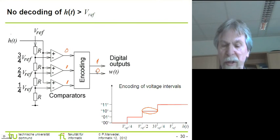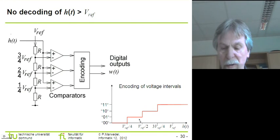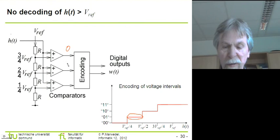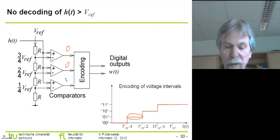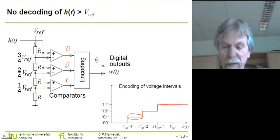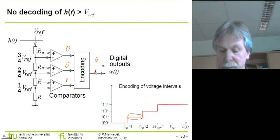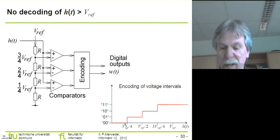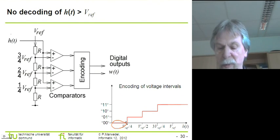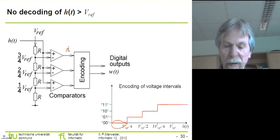That encoder would generate that corresponding encoding of the input signal. Continuing on, if the input voltage is somewhere in the next interval, then obviously these two comparators would generate zeros and only the lowest one would generate a one. This would be encoded as zero one, and that is what we generate as the output of that converter.